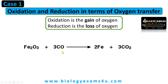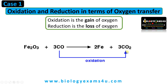Iron oxide combines with carbon monoxide forming iron and carbon dioxide. Let us focus on this oxygen. Carbon monoxide CO is oxidized to form carbon dioxide — oxygen is added to carbon monoxide, so oxidation has happened. Now, which is the oxygen donor for this carbon monoxide? Iron oxide is the oxygen donor.